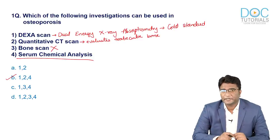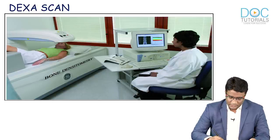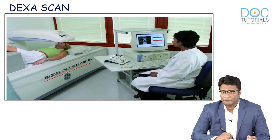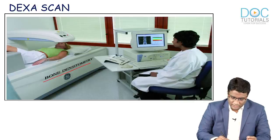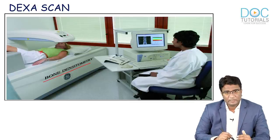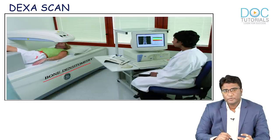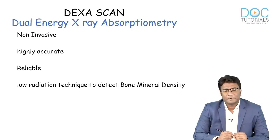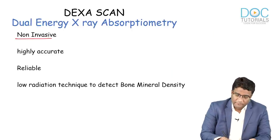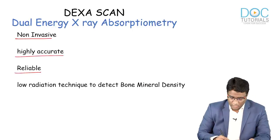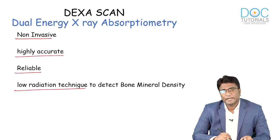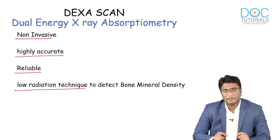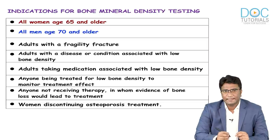All three tests — DEXA scan, quantitative CT, and serum biochemical analysis — can be done, but there is no role for bone scan in the evaluation of osteoporosis. So the correct answer is 1, 2, and 4. DEXA scan is used to measure bone mineral density; the patient lies down and we check the lumbar spine and hip region using central DEXA machines. DEXA is non-invasive, highly accurate, reliable, and a low radiation technique.